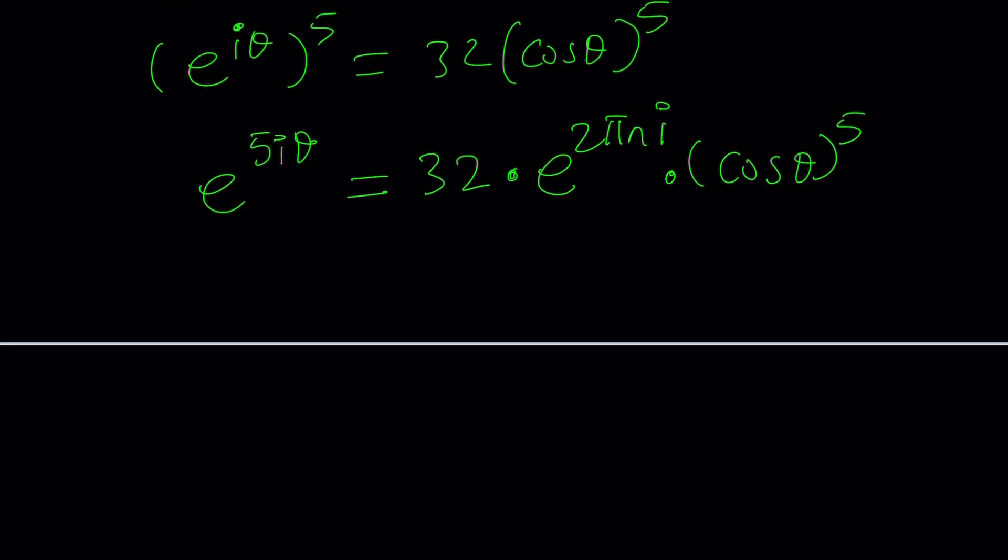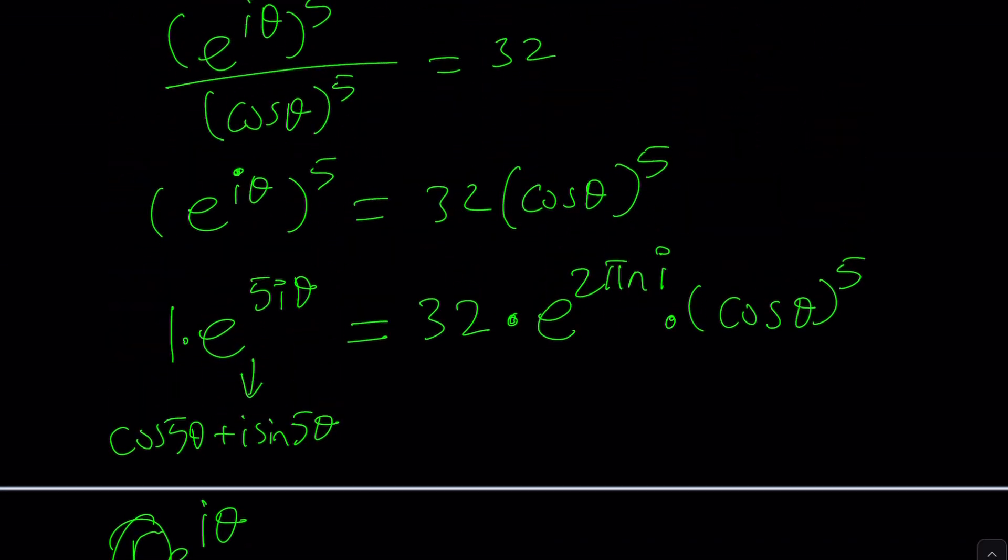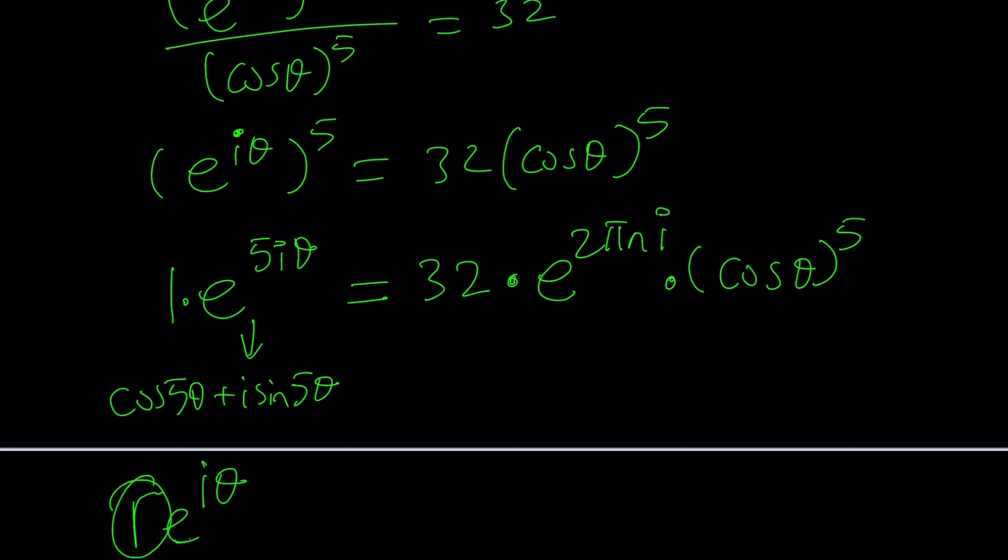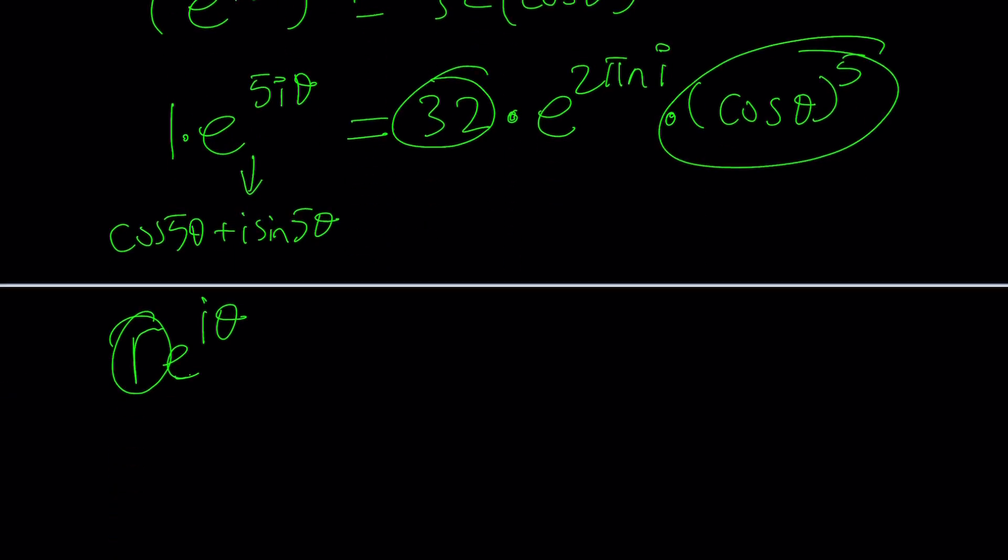We have a number on the left hand side, which can be written as cosine five theta plus i sine five theta in standard form. Its modulus, absolute value is one. Complex numbers can be written as r e to the i theta. R represents the modulus, but here there's no number, so it's one. The right hand side should also have the same modulus. When I do the fifth power, this is going to give me E to the i theta equals two cosine theta times E to the power two pi n i divided by five.